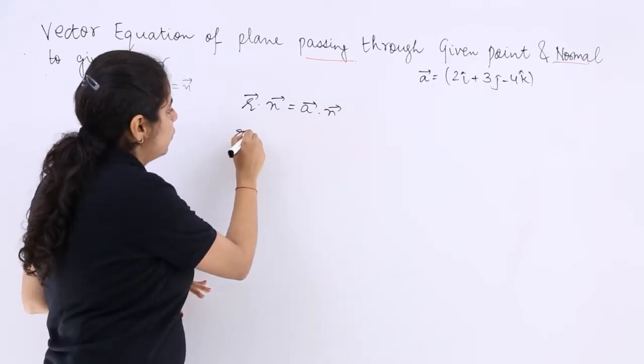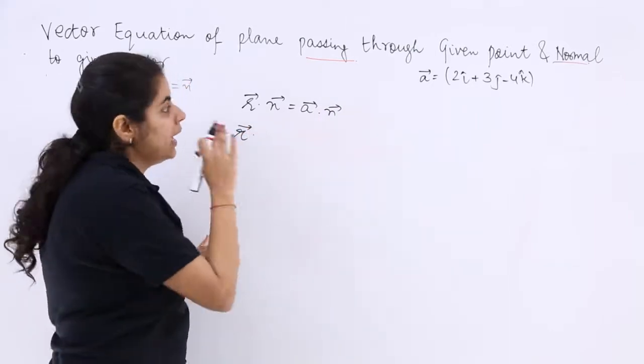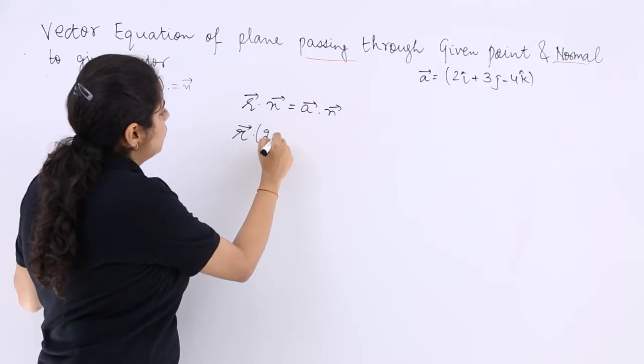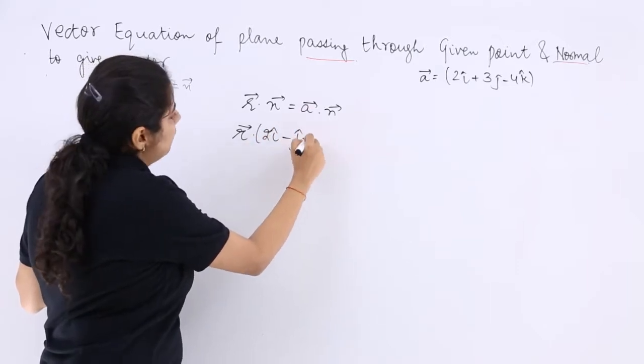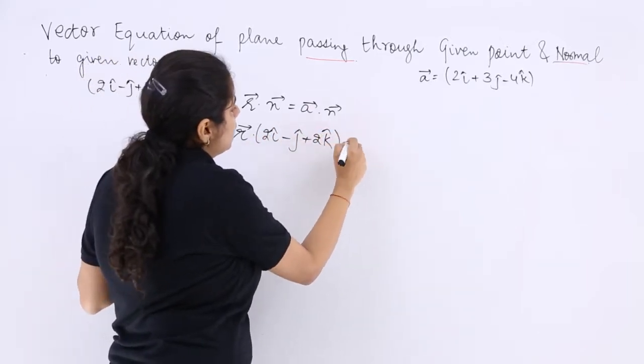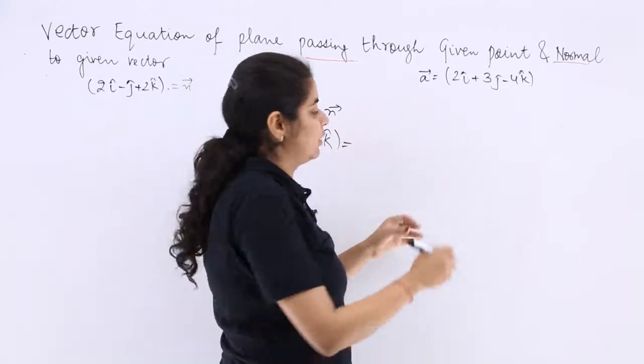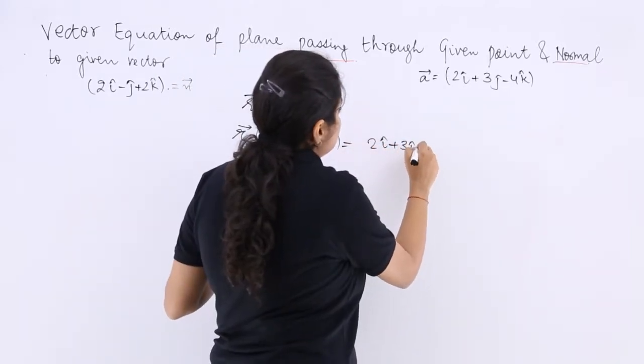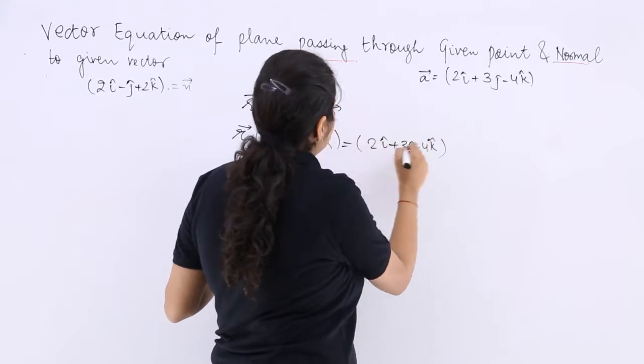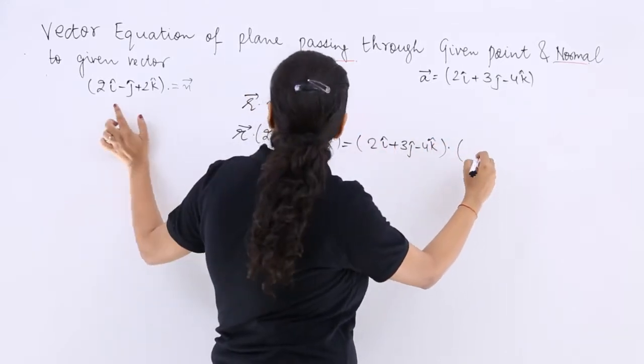r is unknown, so let's put r only. n vector is given as 2i - j + 2k, equal to a vector dot n vector. What is a vector? 2i + 3j - 4k dot n vector. What is n vector?